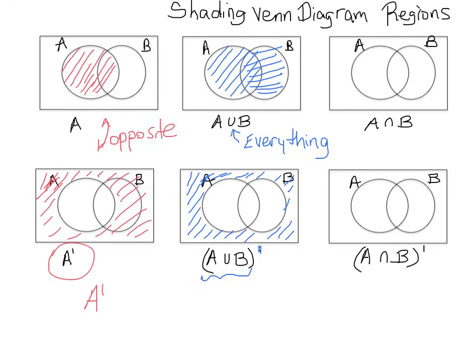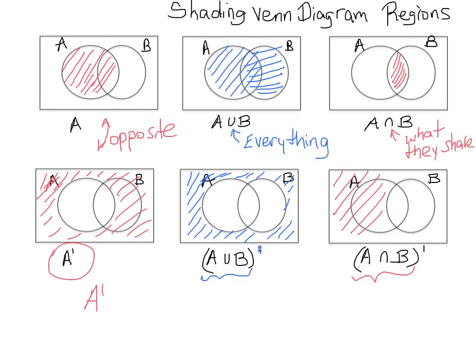A intersect B — whenever you see this symbol, it represents what the two sets have in common. Looking at the diagram, they share the middle, so that is A intersect B. The complement of that is the opposite — everything except the middle.